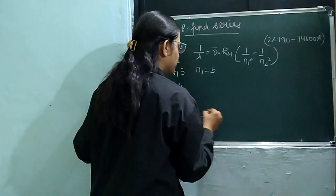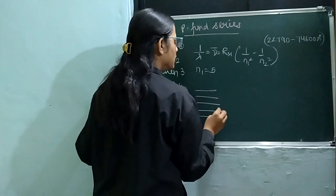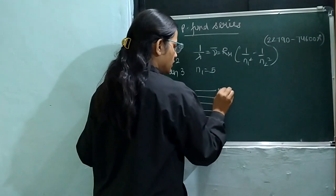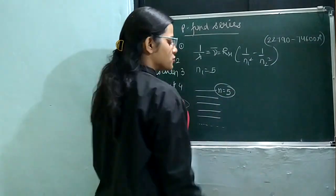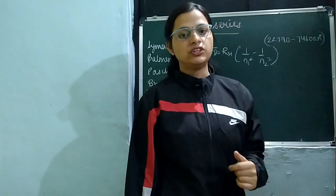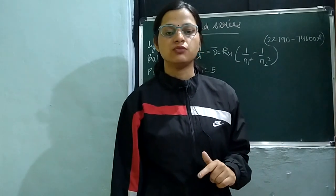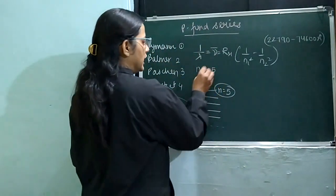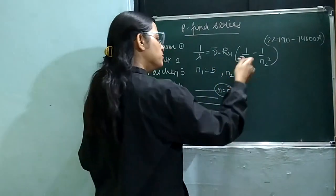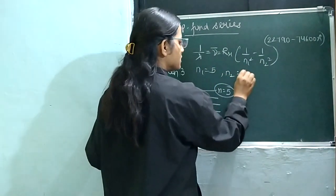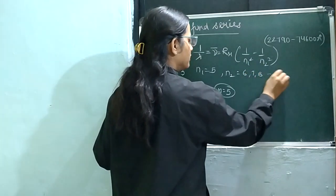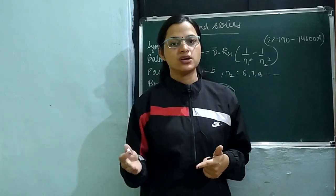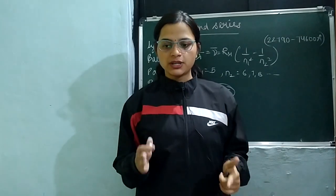If we talk about energy levels — assuming 1, 2, 3, 4, 5 with the ground level here — then N equals 5. The transitions will occur from the 5th energy level upward because it is the Pfund series. N1 value is 5 and N2 value can be more than 5, so that is 6, 7, 8, and so on.